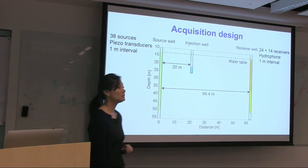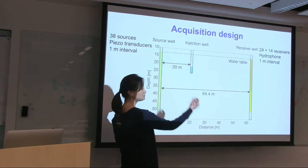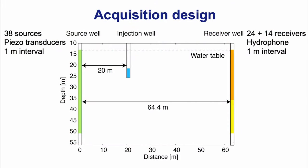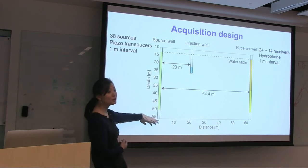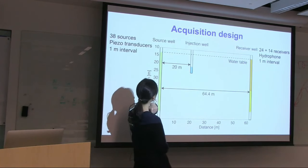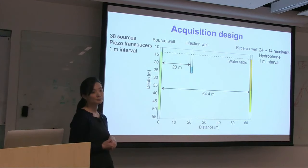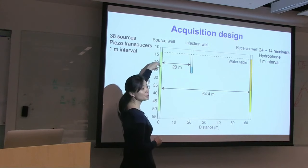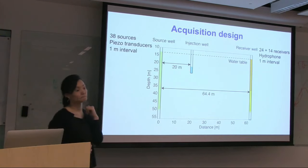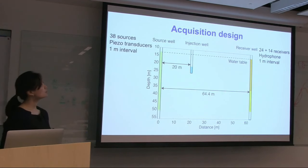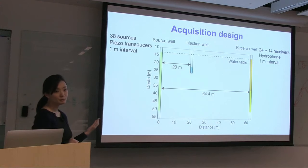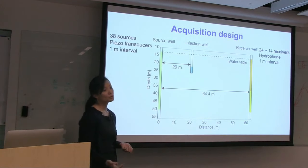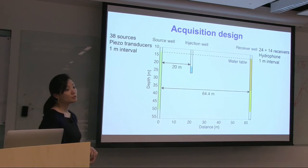Here is the actual system: looking at the vertical section, we drilled two wells. The left-hand side is the source well and the right-hand side is the receiver well. The injection well is about 20 meters from the left-hand side. We look at only 50 meters from the surface, and injection was done at around 22 to 25 meters depth. Groundwater level is at 12 meters, just above our survey depth. The survey used 38 piezo-transducer sources on the left at 1-meter intervals and 38 hydrophone receivers on the right at 1-meter intervals.